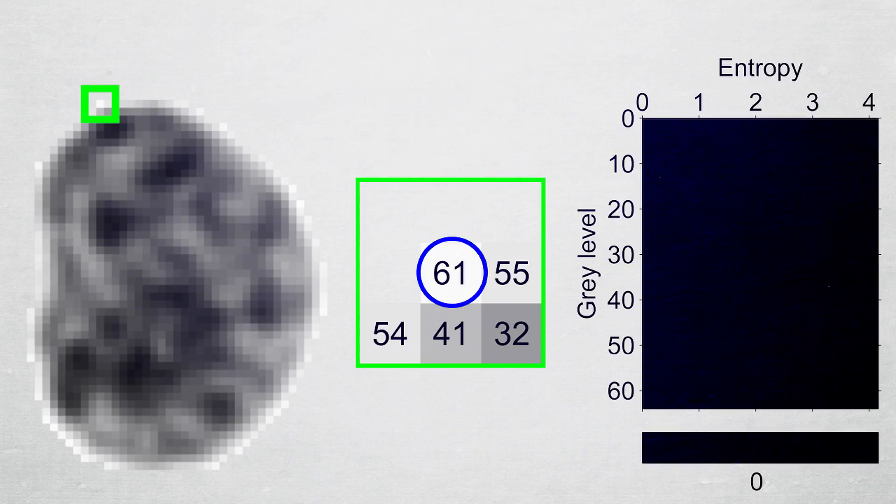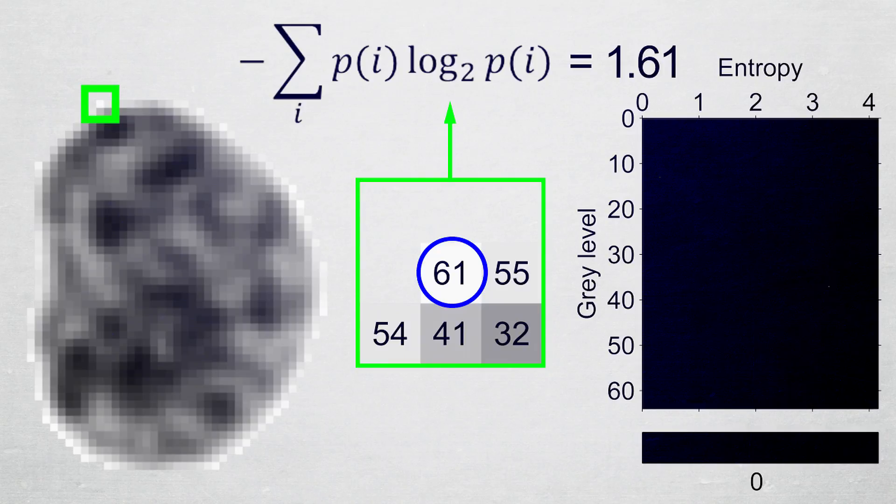The pixels in the window are extracted and their gray level entropy computed. This entropy and the gray level of the center pixel in the window specifies an element in the gray level entropy matrix, and the value of this element is incremented.